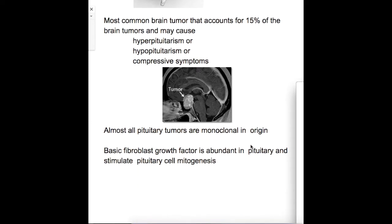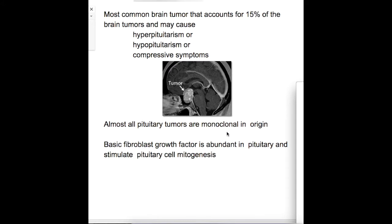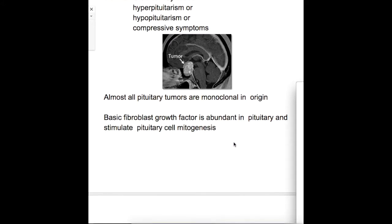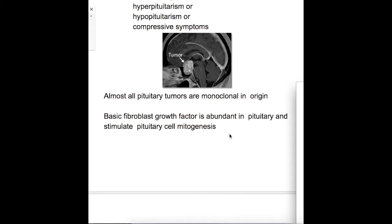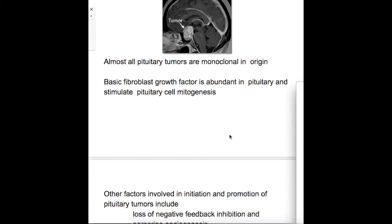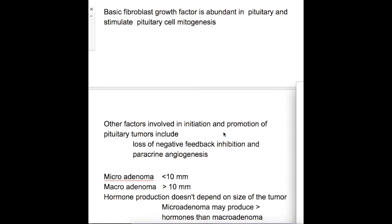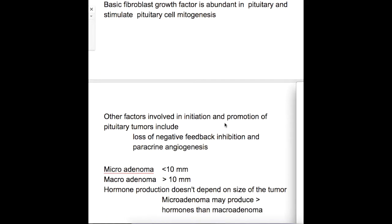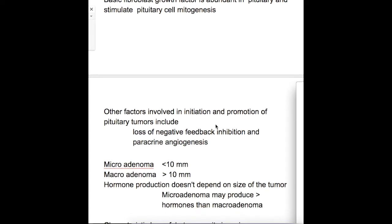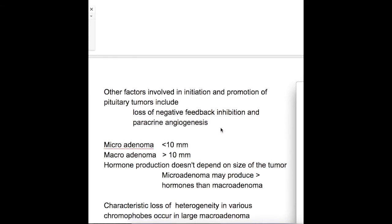Almost all pituitary tumors are monoclonal in origin. Basic fibroblast growth factor is abundant in the pituitary and stimulates pituitary cell mitogenesis. Other factors involved in initiation and promotion of pituitary tumors include loss of negative feedback inhibition and paracrine angiogenesis.